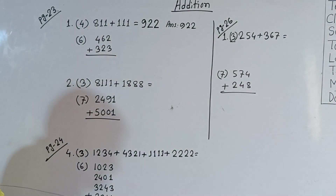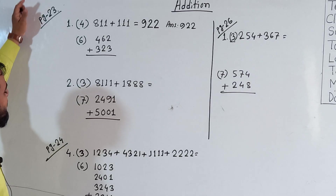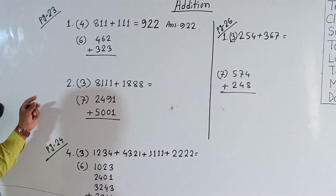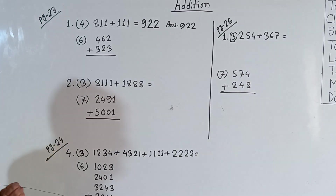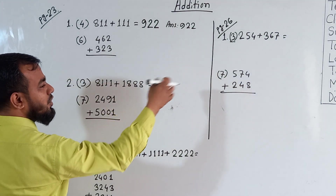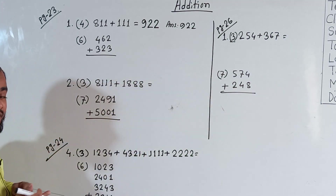There is a very important thing: page number 23 and page number 24 are addition without carrying. But on page number 26, we will see addition with carrying — we will solve that later.